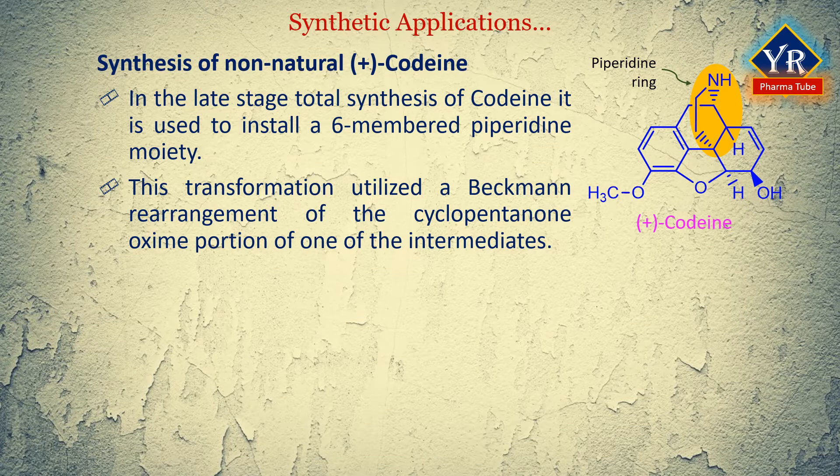To this end, an oxime brosylate was prepared which underwent a smooth Beckman rearrangement in acetic acid to provide a 69% yield of two isomeric lactams in an 11 to 1 ratio in favor of the desired isomer.